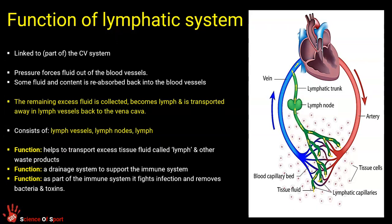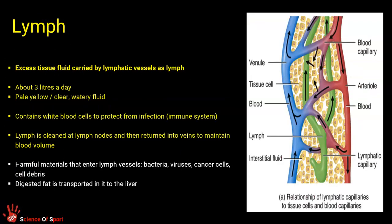So the components that make up the lymphatic system. First of all, lymph. Lymph is the tissue, the fluid part. And it's carried in lymph vessels. We have about three liters of a day circulated and produced. So remember, the extra fluid is squeezed out of our capillaries from our normal cardiovascular system. And that excess fluid drains into our lymphatic capillaries and is taken away. This lymph, this fluid contains really important white blood cells, which help protect us from infection. And that part of it is part of our immune system.